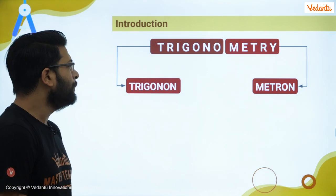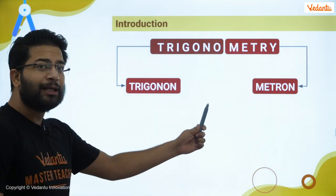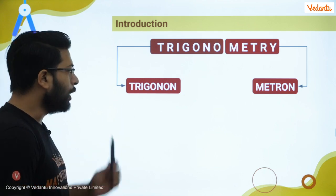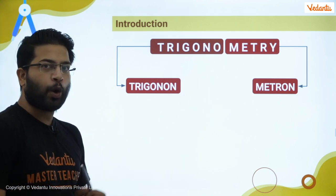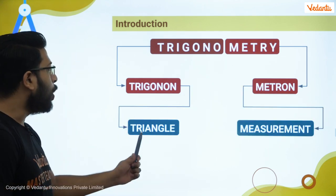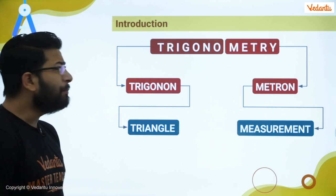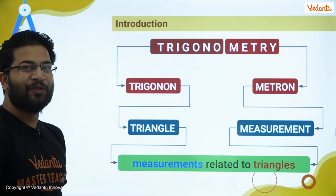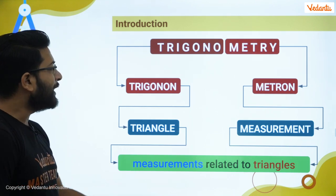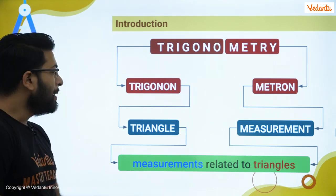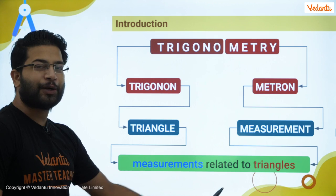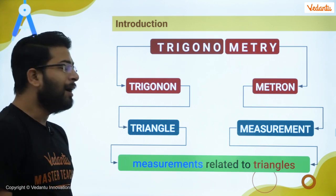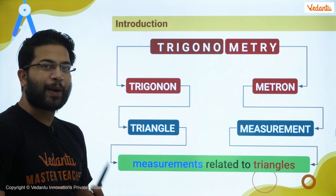Trigonometry is the combination of two different words: one is 'trigonon' and the second is 'metron'. The meaning of trigonon is triangle and the meaning of metron is measurement. So if I combine these two words, trigonometry is nothing but measurement related to the triangle.